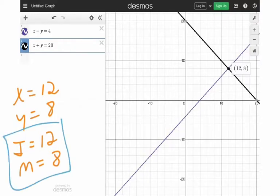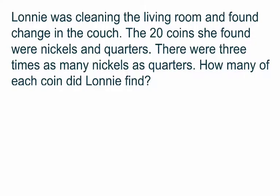Desmos makes it pretty simple if you can get the equation, plug it in, and get the answer. Let's do one more — a tricky one just in case these come up. Lonnie was cleaning the living room and found change in the couch. The 20 coins she found were nickels and quarters. There were three times as many nickels as quarters. How many of each coin did Lonnie find?